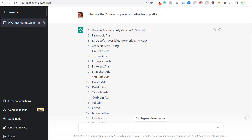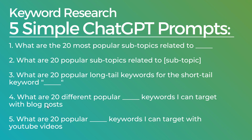Coming back to ChatGPT and using the prompts, we're going to use four different prompts for Microsoft advertising: popular subtopics, popular long-tail keywords, 20 popular Microsoft advertising keywords I can target with blog posts, and 20 popular Microsoft advertising keywords I can target with YouTube videos. You can also do this for your main topic — PPC advertising or paid advertising. As you break down your niche further and cover more subtopics, the better you're going to rank in the YouTube search engine, Google search engine, and Bing search engine, driving organic traffic.